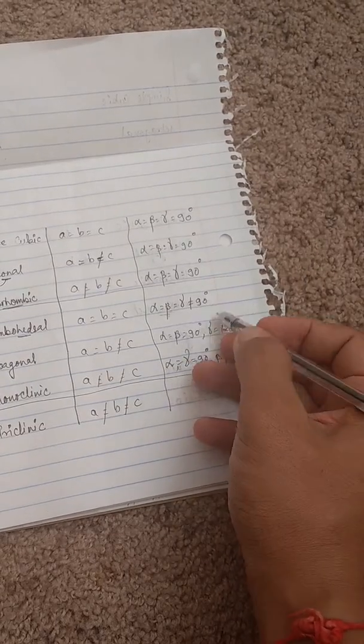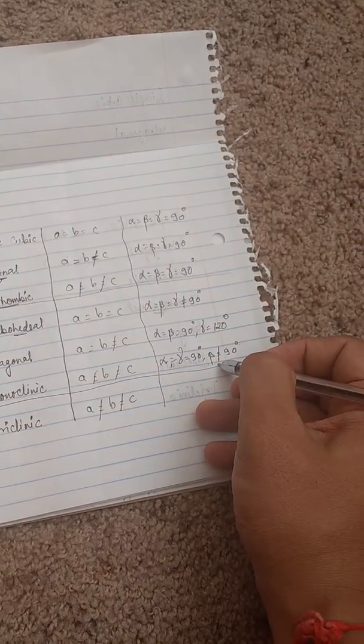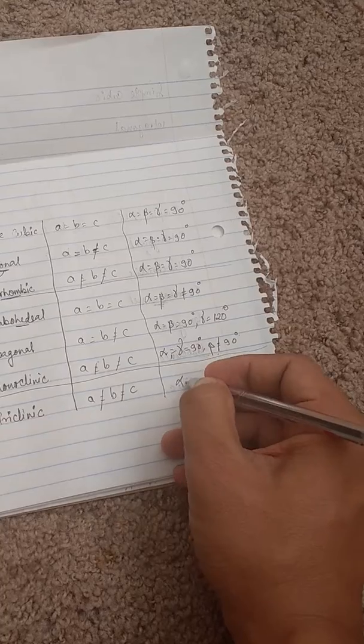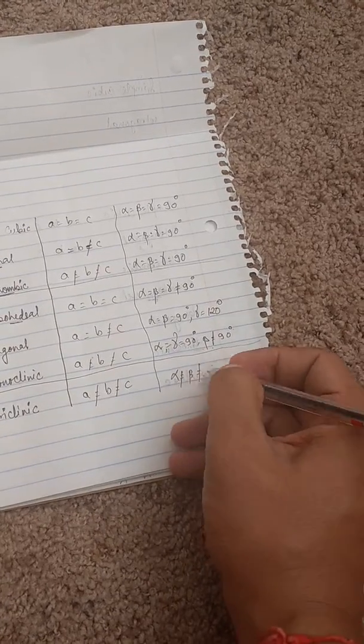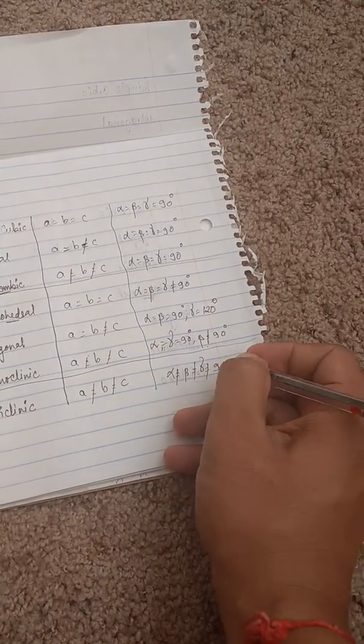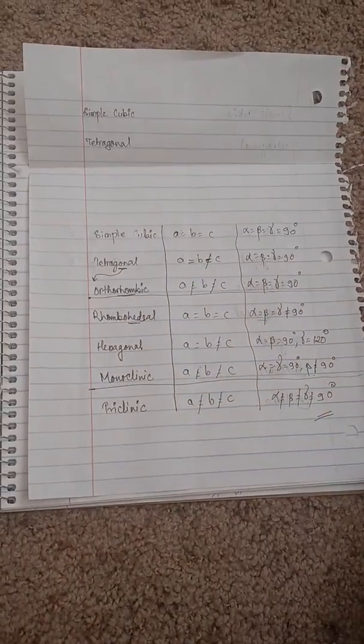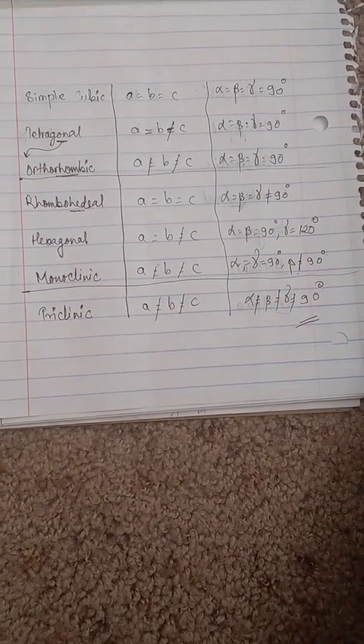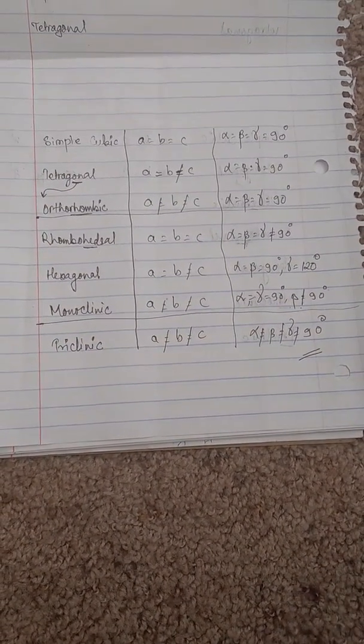In this one, gamma equals 90 degrees; in this one, beta doesn't equal 90 degrees. Triclinic is the special case where nothing is equal. This is the simplest trick. All the best!